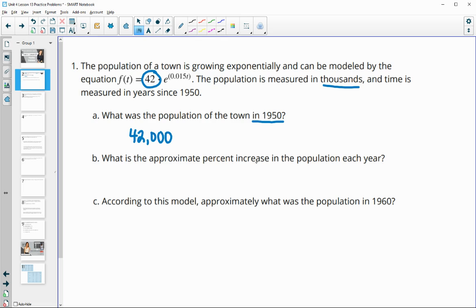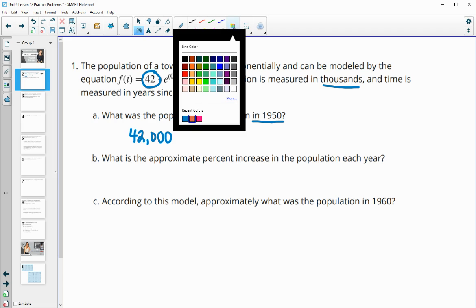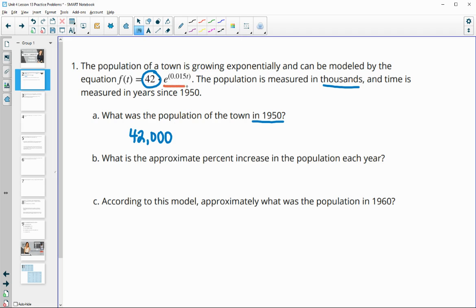Part B says what's the approximate percent increase of the population each year? For this, we can take a look at the growth factor. So if we just isolate this part and we look at e to the 0.015t and we just do one year, I'm just going to do the t as one to see what happens or what the growth factor is for one year. And when you type this into your calculator, you get 1.01511.